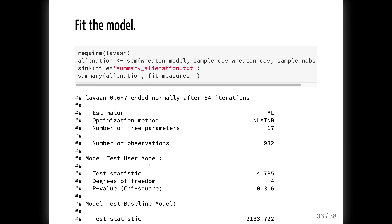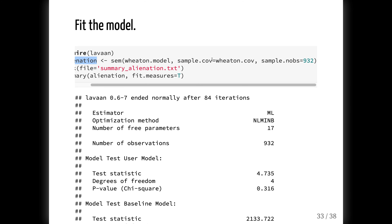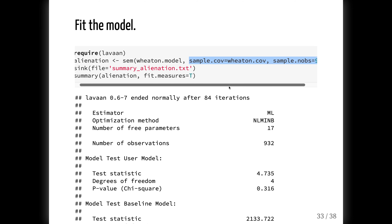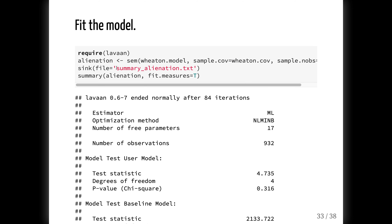Once specified, fitting the model is straightforward. We call this model 'alienation', put in that it's based on a covariance matrix, and specify the sample size. In this case you can see it's quite sample-size hungry — we have 932 people. We send the output to a file, ask for fit measures, and could also request standardized estimates.